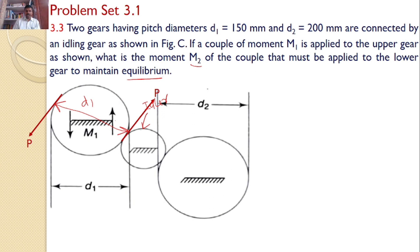The idler is connected to gear 1, and force P also acts on the idler gear. To satisfy equilibrium, the idler is subjected to force P in the opposite direction.